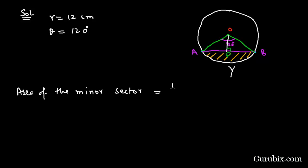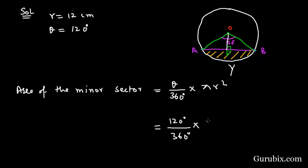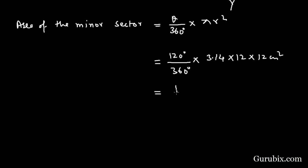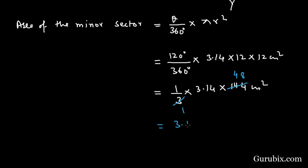Now we shall find the area of the minor sector using the formula: (θ/360°) × πr². Here θ is 120°, π is taken as 3.14, and r is 12 cm. So we get (120/360) × 3.14 × 144 = (1/3) × 3.14 × 144 = 3.14 × 48 cm².